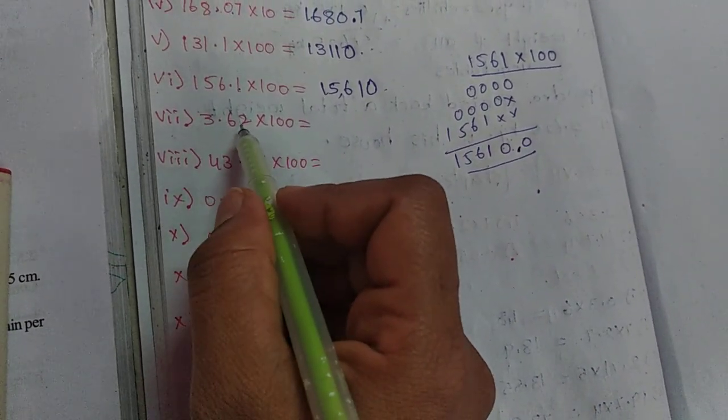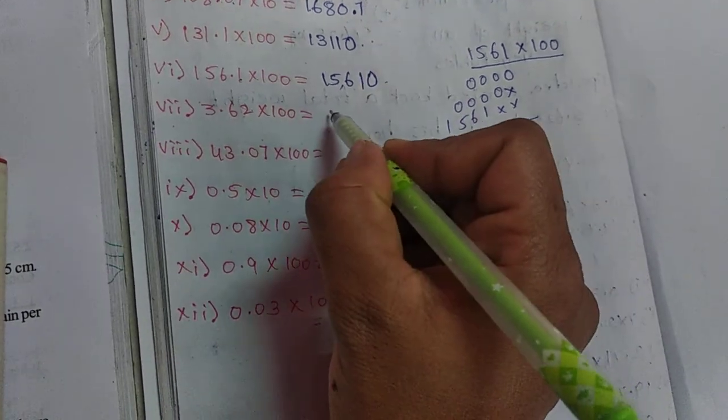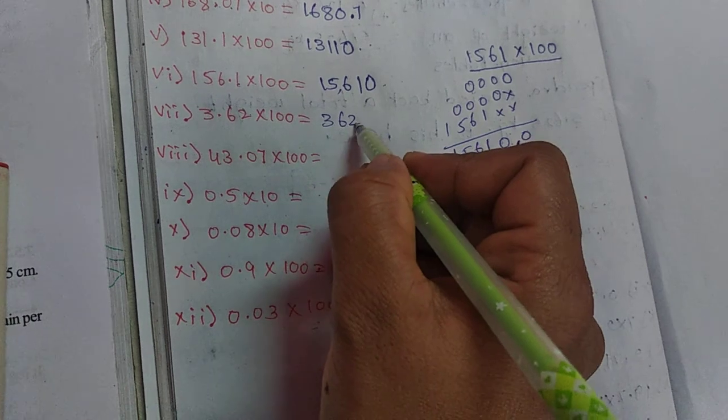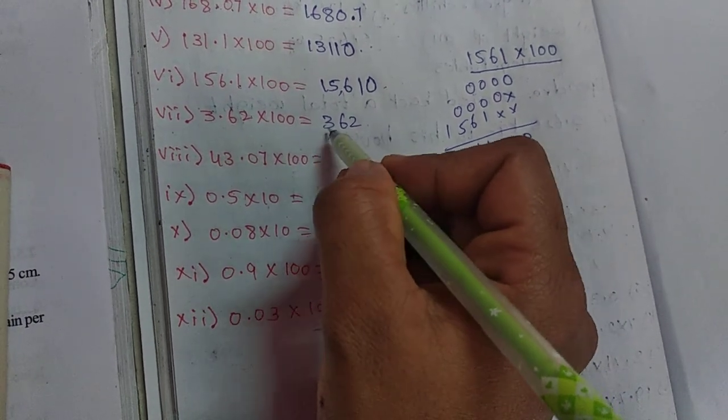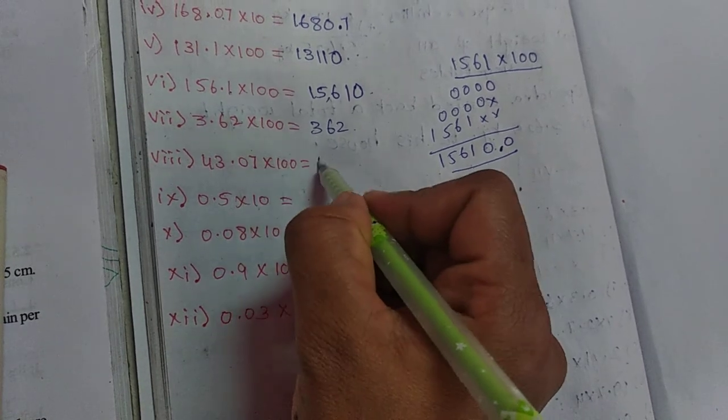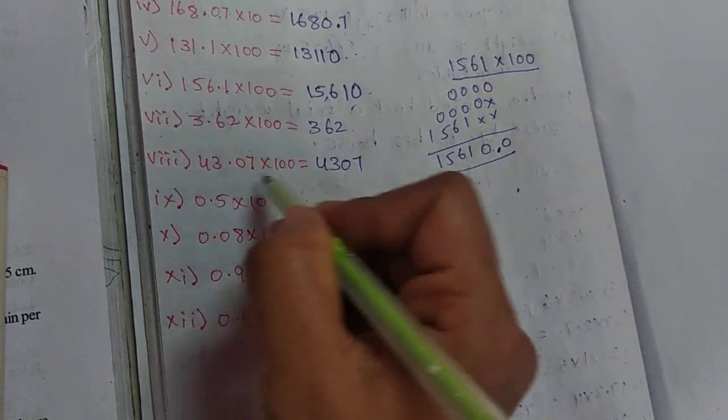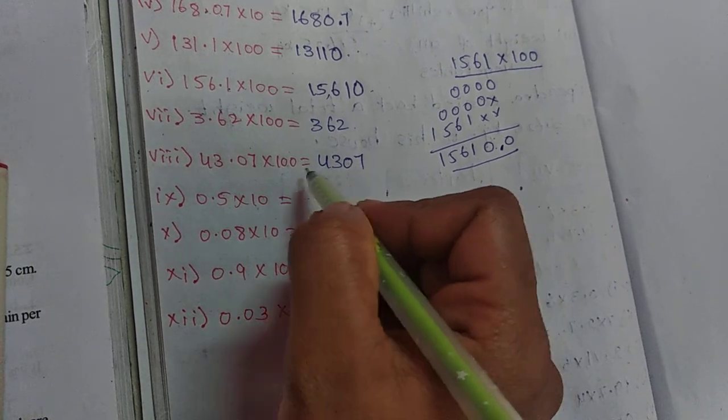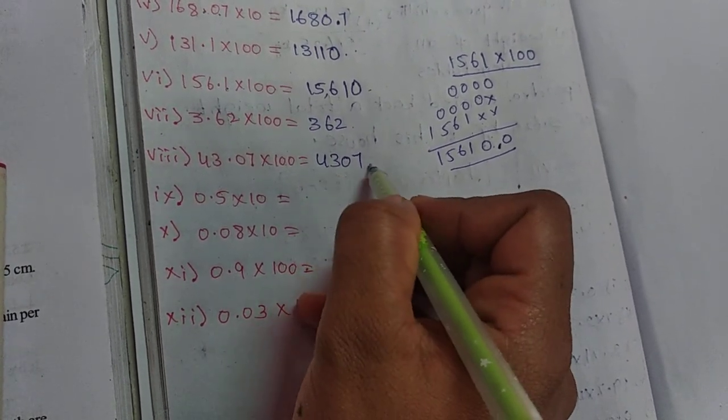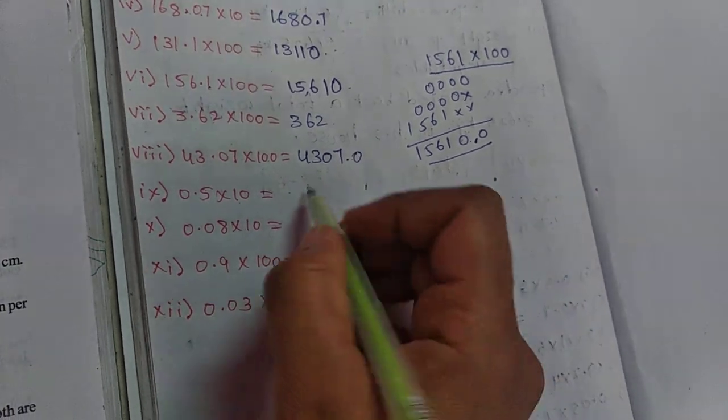Next, 3.62 into 100. First write the number. Two digits move to the right side, count 1, 2. Here the point comes. The answer is 362. Here, 43.07 into 100. Write this number. Two digits we should count from here: 1, 2, and here. So 4307 it will come.